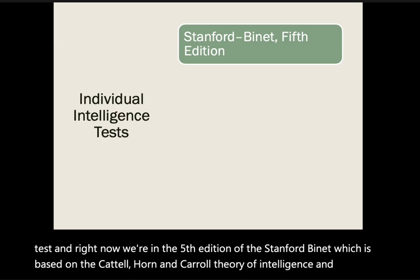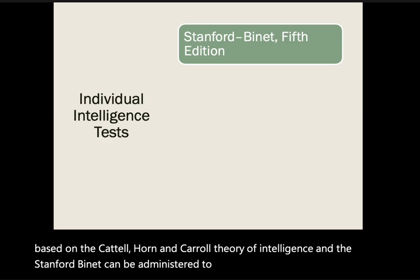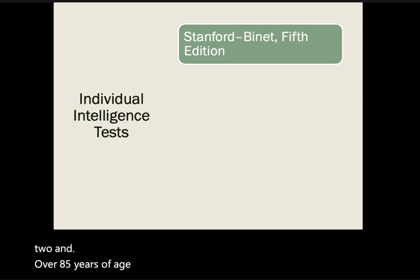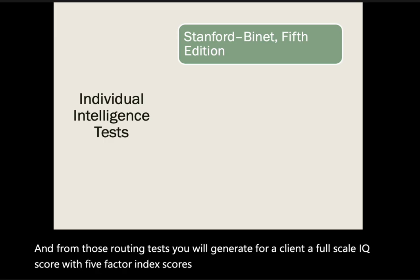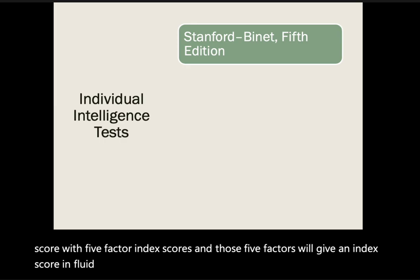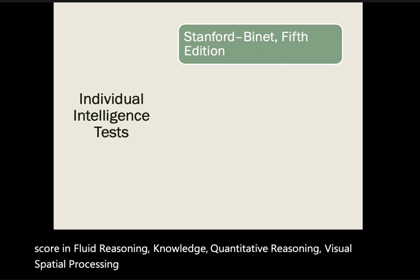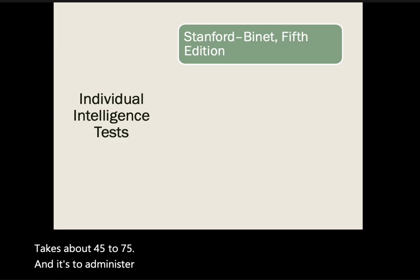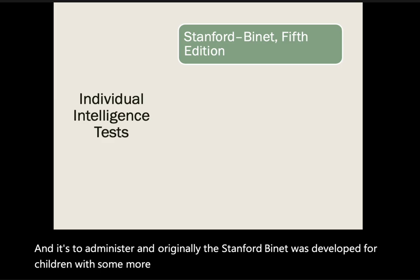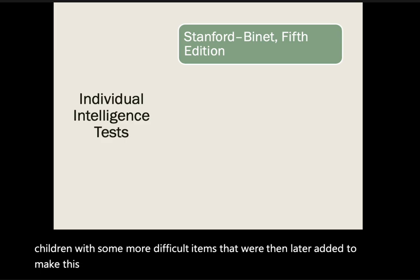The Stanford-Binet can be administered to individuals between the ages of two and over 85 years of age. It includes two routing tests, and from those you generate a full-scale IQ score with five factor index scores in fluid reasoning, knowledge, quantitative reasoning, visual-spatial processing, and working memory. The Stanford-Binet takes about 45 to 75 minutes to administer. Originally developed for children, more difficult items were later added to make it applicable to adults.